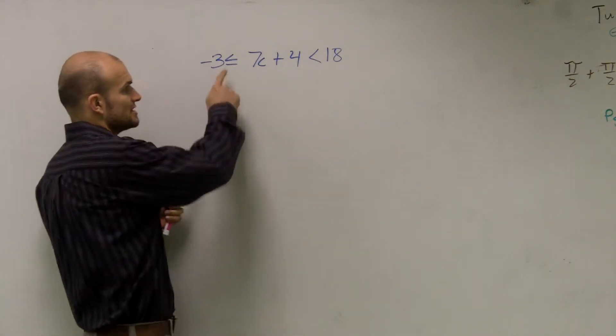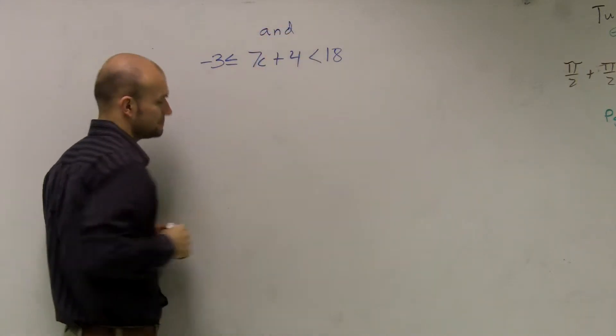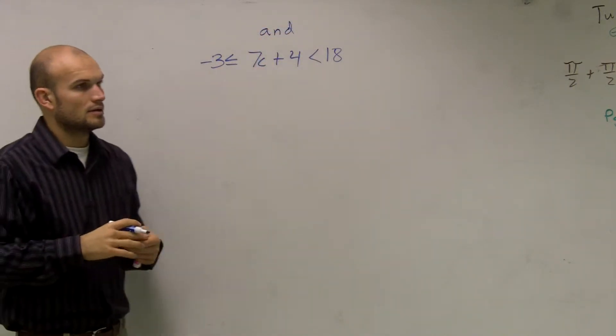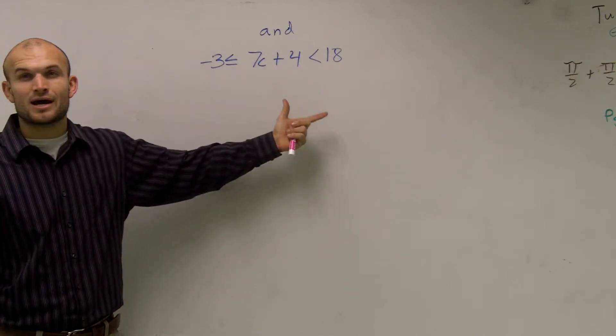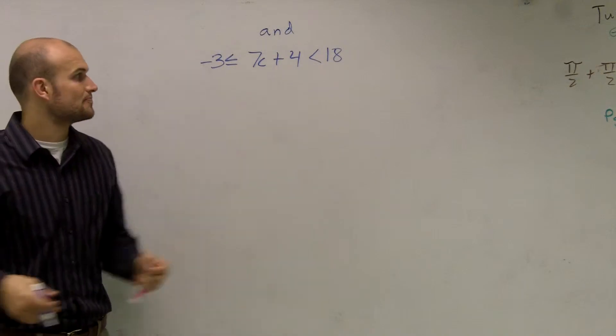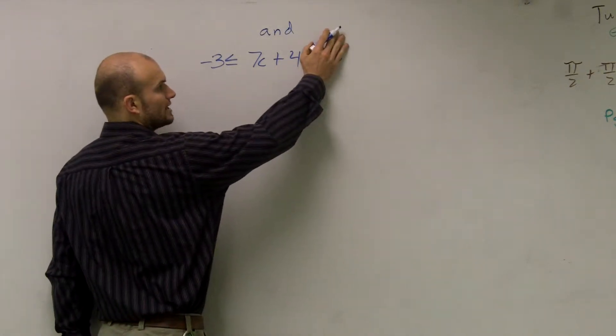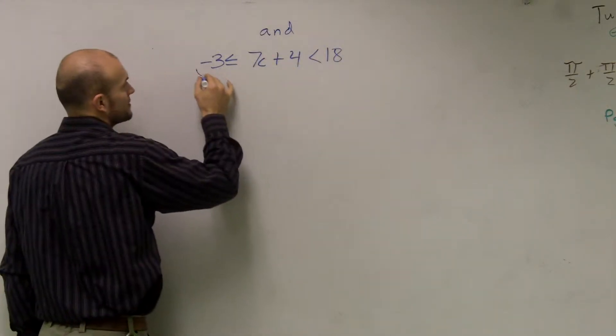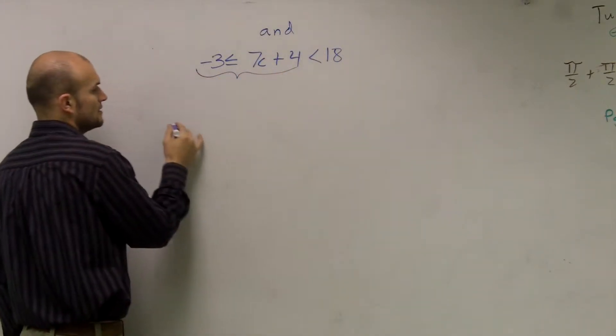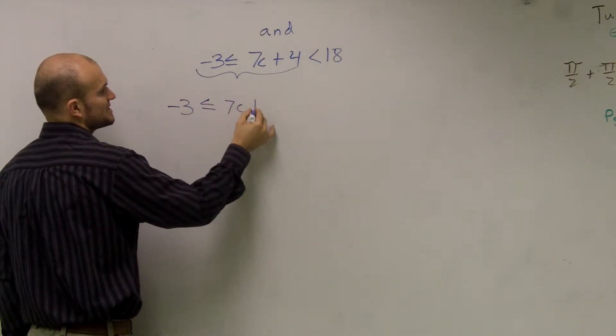So since my signs are in the same direction, I know this is going to be an 'and' statement. Now, there is a way to solve this together, but I want to show you a way to solve them separately. The way to solve them separately is to put your hand over one inequality sign and the answer. Therefore, I'm left with that. So I'm just going to rewrite that: negative 3 is less than or equal to 7c plus 4.